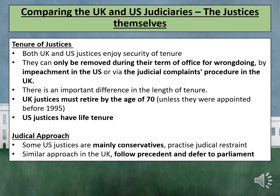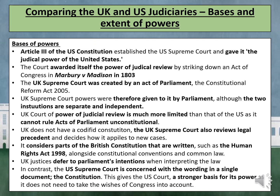Some US justices are mainly conservative and practise judicial restraint. There is a similar approach in the UK where they follow precedent and defer to Parliament. However, some US justices believe their role is to interpret the living constitution in a modern context. This loose constructionist approach can lead to judicial activism when justices make decisions to improve society. In the UK, justices have much more limited interpretative roles. We must also compare the basis of power and the extent of powers for both Supreme Courts.